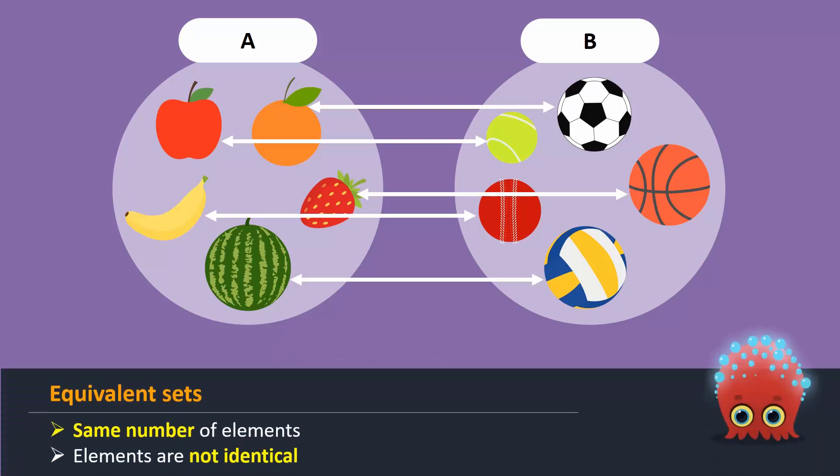Sets with the same number of elements where the elements are not identical are called equivalent sets. Therefore, sets A and B are equivalent.